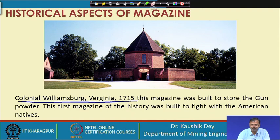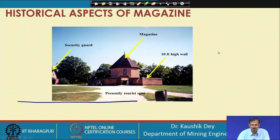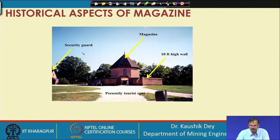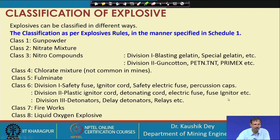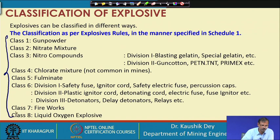This magazine is now kept as a tourist spot. You can see the security guard magazine with a 10-feet high wall, and this tourist spot is nowadays very popular in Williamsburg. Now let us look into the classification of explosives as per our explosive rules, the CMR, and the MMR — the explosive classifications are as follows. We classify our explosives into 8 classes.